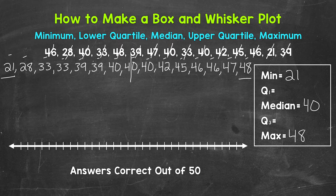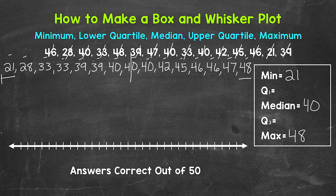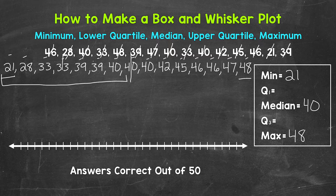Now that we have the median, we can find the first quartile and the third quartile. The first quartile, also called the lower quartile, is the 25th percentile — the median of the lower half of the data. We have seven numbers in the lower half, so there are three numbers on each side, and the first quartile is the number in the middle, which is 33.